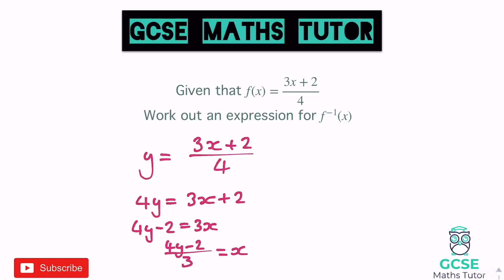Then divide both sides by 3, so it would be 4y minus 2 all over 3 equals x. And then finishing that off, just swap the x and y over — so rather than 4y it would be 4x minus 2 all over 3, and that equals the inverse function of f. So swap f of x or g of x for y equals, rearrange it to make x the subject, and then swap your x's and y's back over, and you'll get your inverse function.